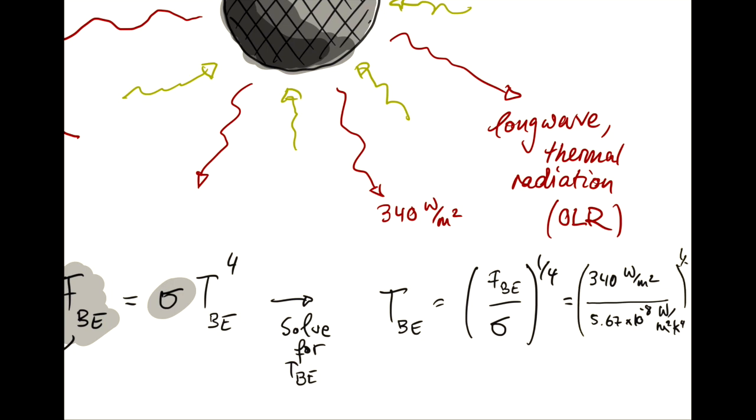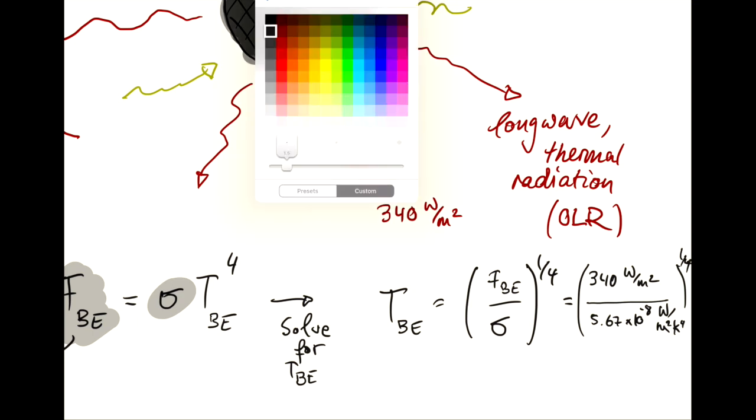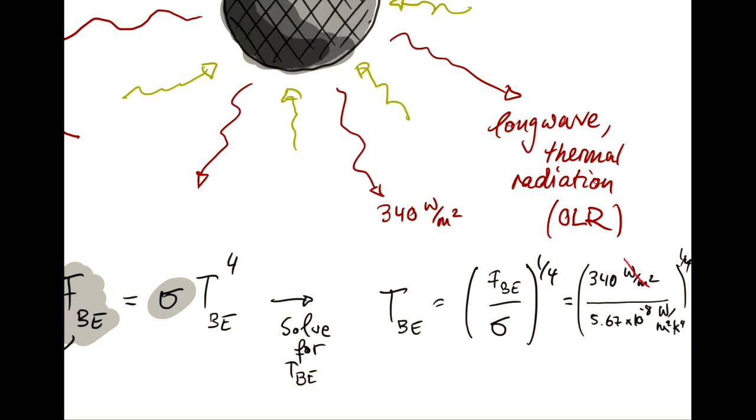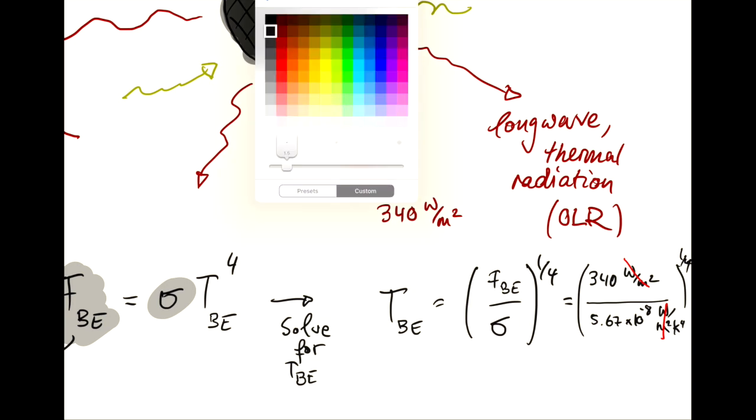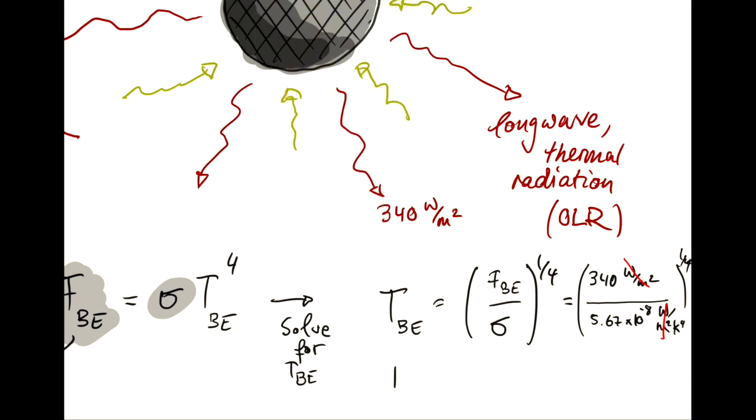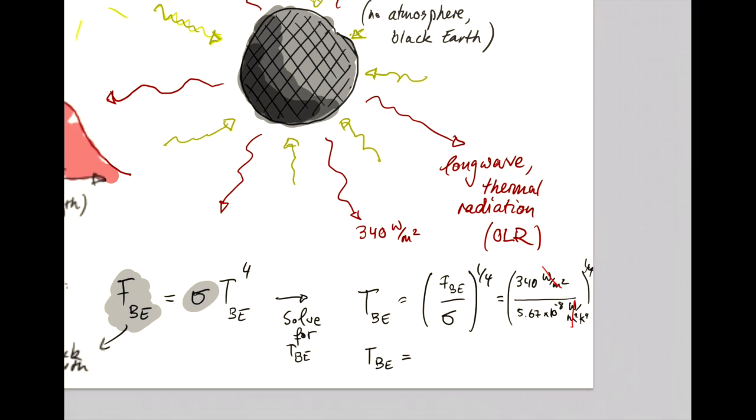And we take a quarter of that. And so, then you can see that if you look at the units, the watts per meter squared cancel and you get a K to the 4 and a quarter power here. So, you get Kelvin in the end, which is what we want.